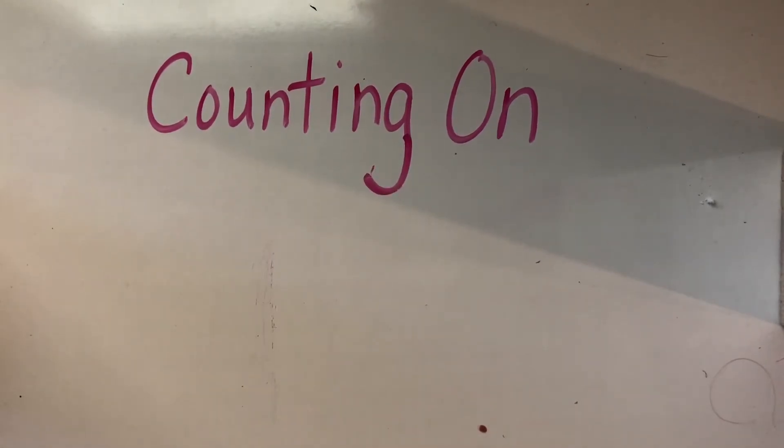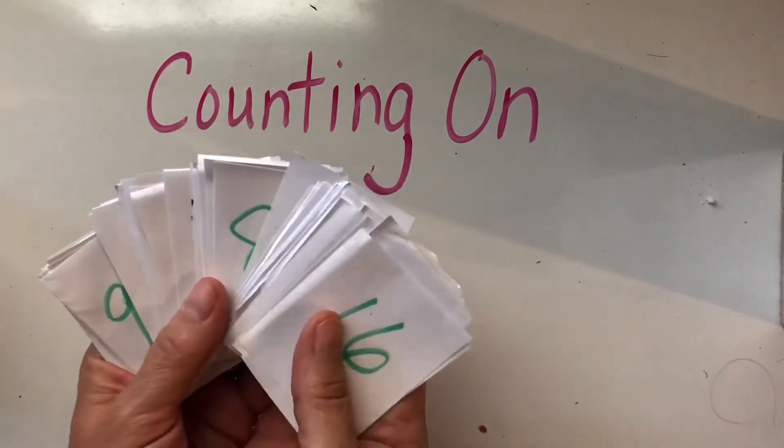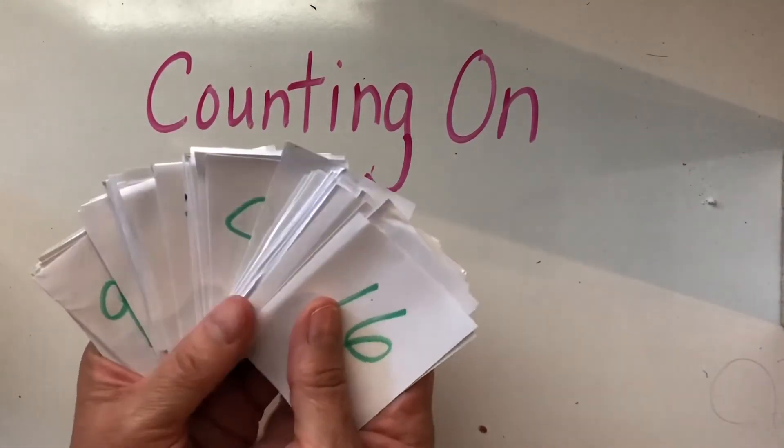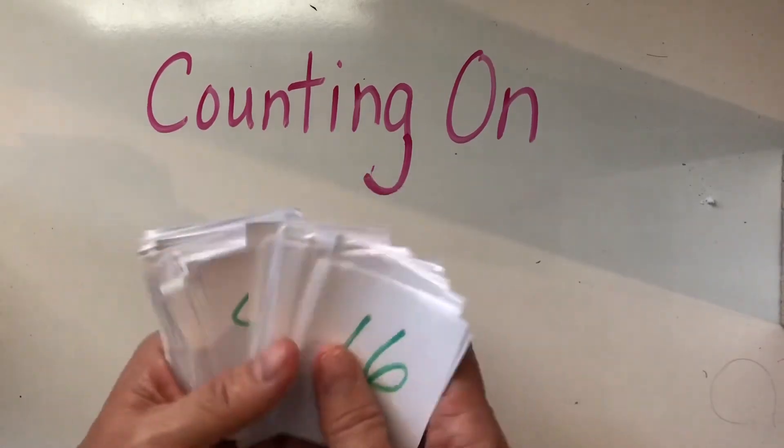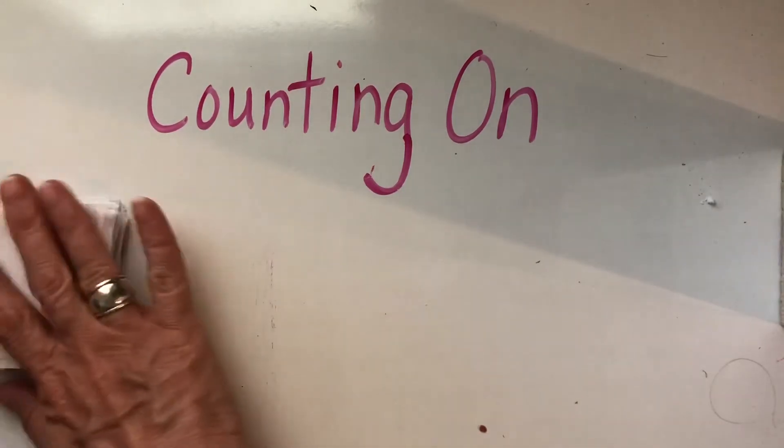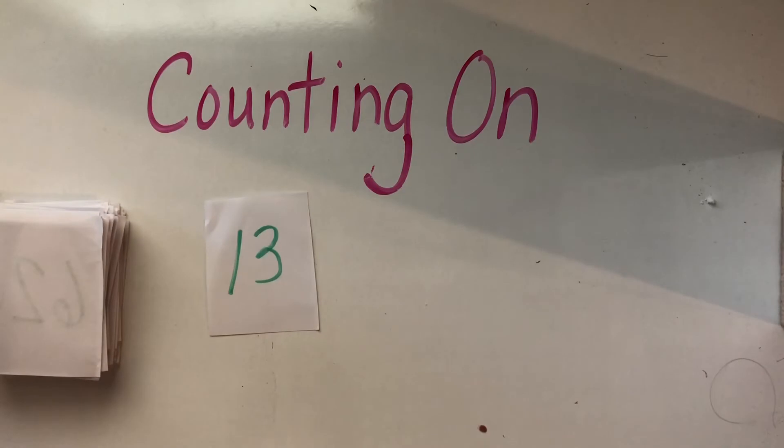Another activity you could try would be to get out your number cards. And remember, I made number cards from one to 100. Took a little bit of time, but you can do it. And all you would do is put your cards face down, flip over a card, and count on. So let's try it.